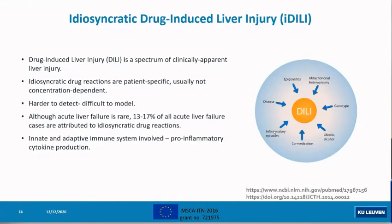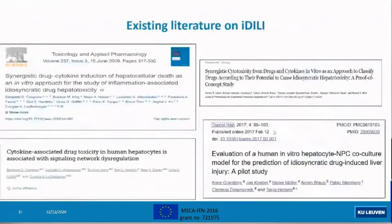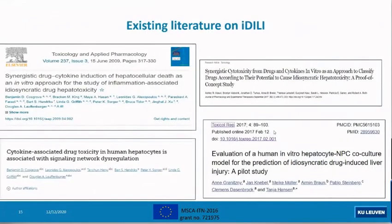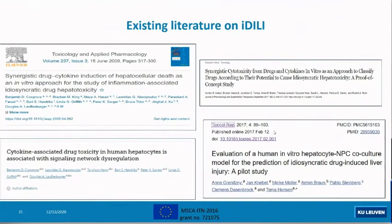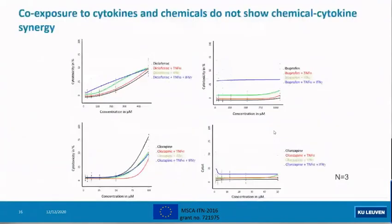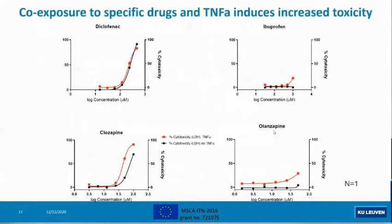There seems to be involvement of pro-inflammatory cytokine production. Some groups have tried to model it using either HepG2 cells or primary hepatocytes, attempting to demonstrate the synergism of drug and cytokines such as TNF-alpha and interferon-gamma or even lipopolysaccharides. So I try to do that here in my cells using these compounds.